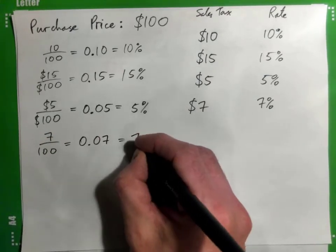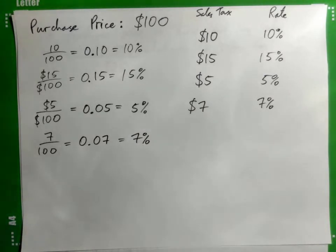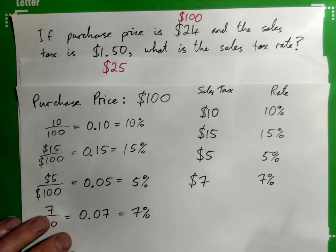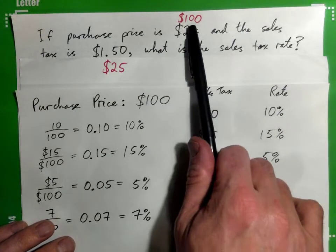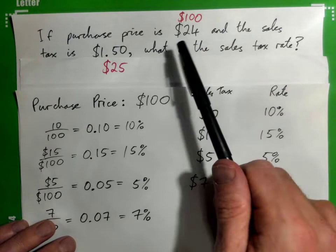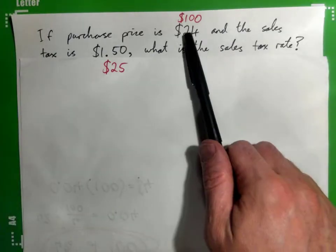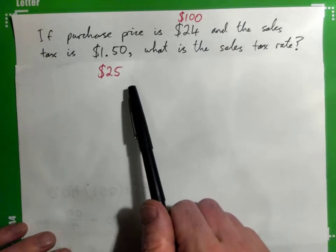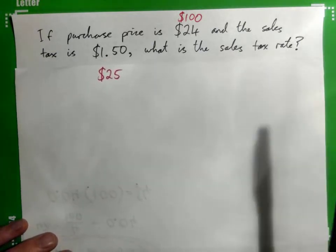Is this making sense, or is this just memorization? This makes sense. Okay, good. So we made up some easy numbers. If the purchase price was $100 and the sales tax was $25, what would the sales tax rate be?